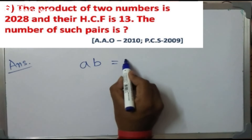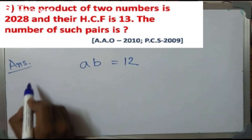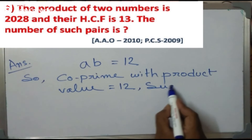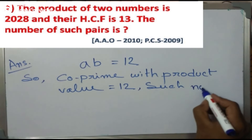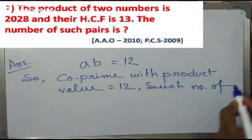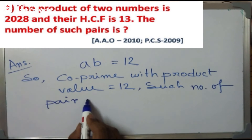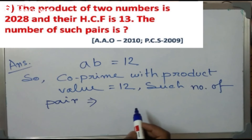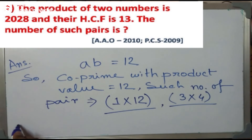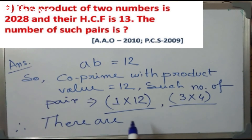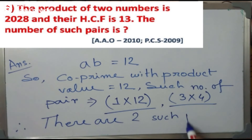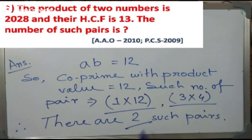We need co-prime pairs whose product equals 12. The pairs are (1, 12) — HCF is 1, and (3, 4) — HCF is also 1. Both pairs satisfy the co-prime condition and have a product of 12. So there are two such pairs. This question comes in placement exams.